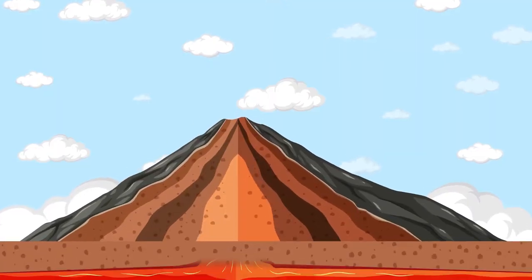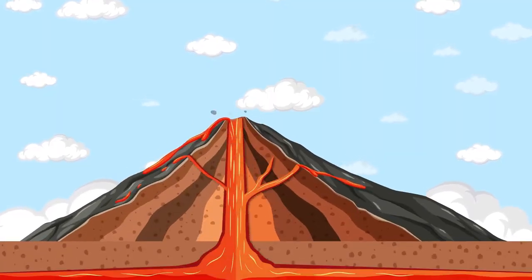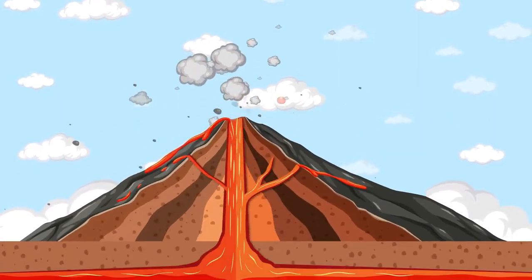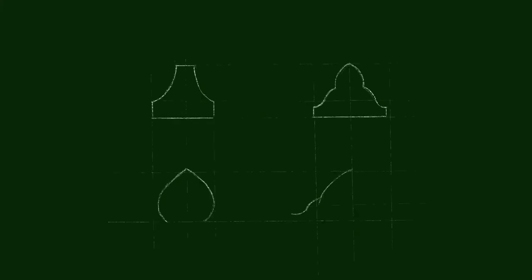On Earth, life finds a way even in the harshest environments, from microbes that thrive in radioactive waste to organisms living in the crushing depths of the ocean. Nature is astonishingly resilient. Could something similar exist on Proxima b?